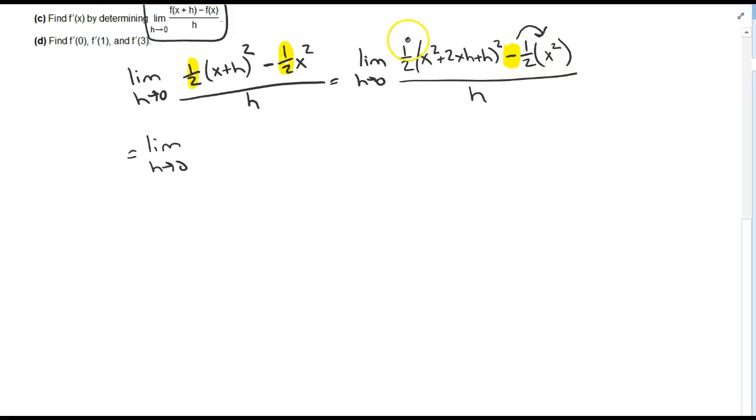I'm going to go ahead and distribute this 1 half to all the terms. I'm sorry, that h squared should be inside the parentheses. So I have 1 half x squared plus xh plus 1 half h squared minus 1 half x squared.